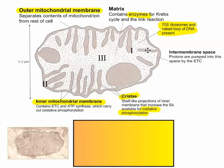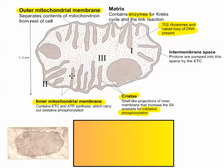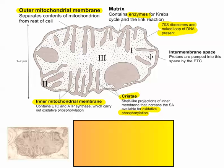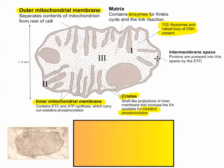The intermembrane space is super important because this is where the protons accumulate as a result of the electron transport chain. The electron transport chain (ETC) sits on the inner mitochondrial membrane — that's also where the ATP synthase enzymes will be. The protons accumulate in here, and in order to make ATP, the protons diffuse back into the matrix through ATP synthase enzymes.